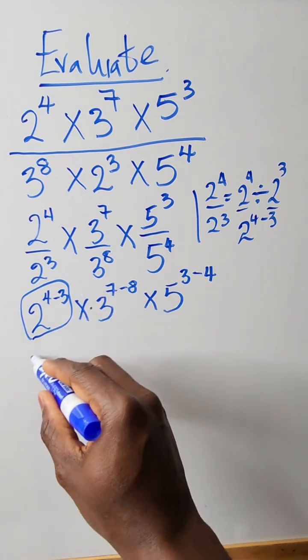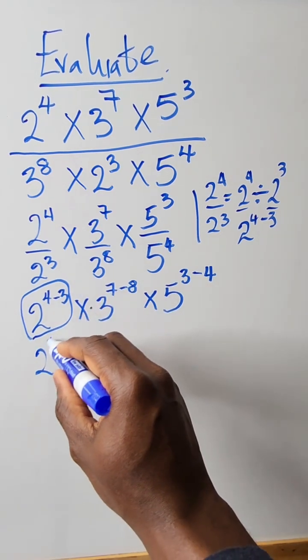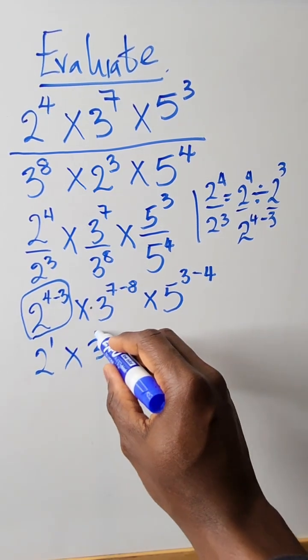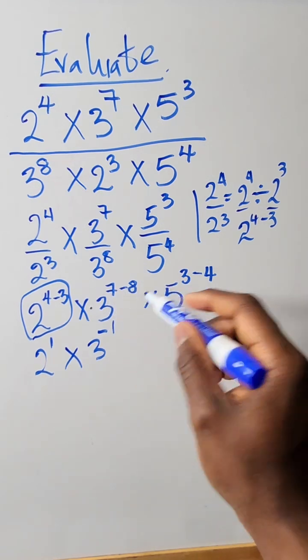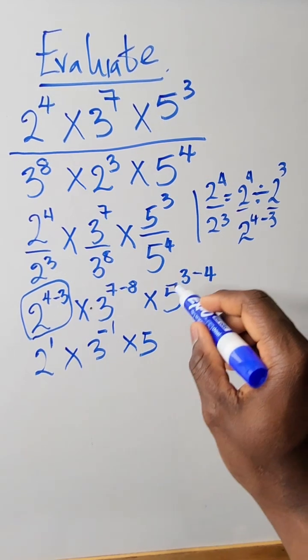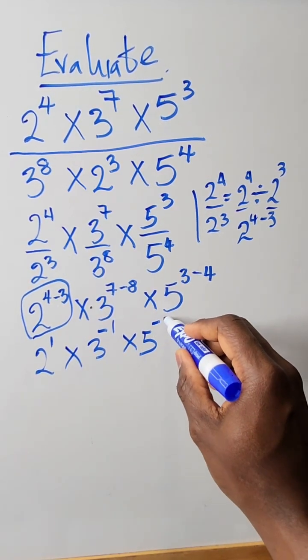Okay, so we carry on. 2 raised to power 1, because 4 minus 3 is 1, times 3 raised to power minus 1, because 7 minus 8 is minus 1, times 5 raised to power 3 minus 4 is minus 1.